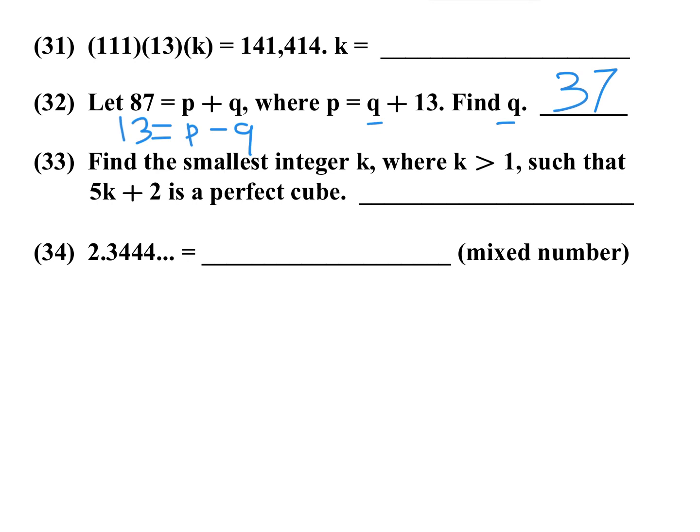Number 33: find the smallest integer k where k is greater than 1 such that 5k plus 2 is a perfect cube. Your perfect cubes, make sure you memorize those: 1 cubed, 2 cubed, 3 cubed, 4 cubed, 5 cubed, and so on. k has to be greater than 1, so you can try a 2. 2 times 5 plus 2, that's not going to work. Try a 3: 5 times 3 is 18 plus 2, that's not going to work. Try a 4, that would be 22. Try a 5: if k is 5, 5 times 5 is 25 plus 2 gives us 27. So that means for 33, k is 5.